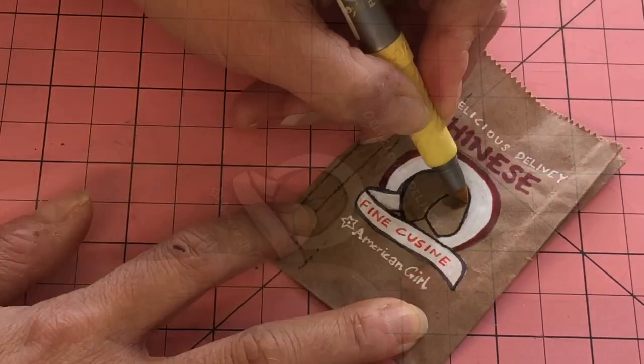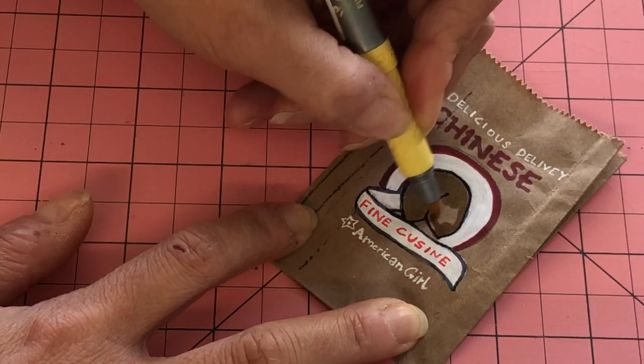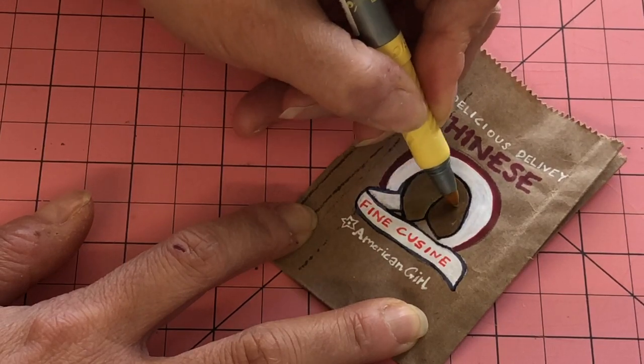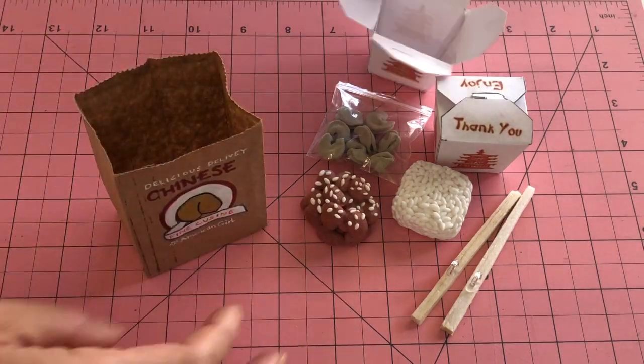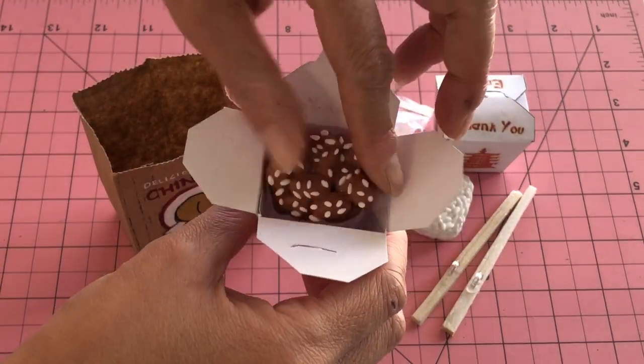Finally, saturate the cookie image with a yellow marker to give the paper some subtle difference. Package all your dishes up into their boxes and it's ready for delivery to the doll's door.